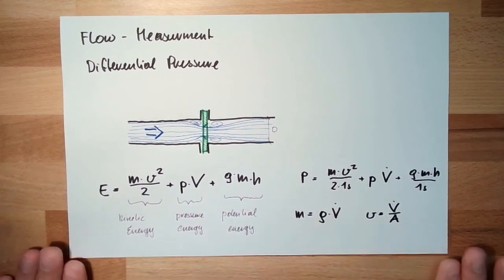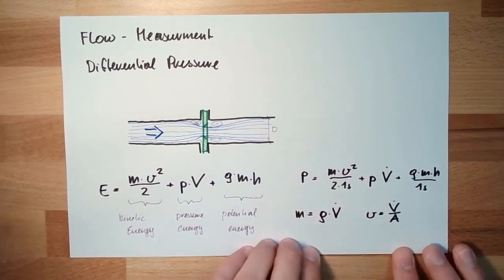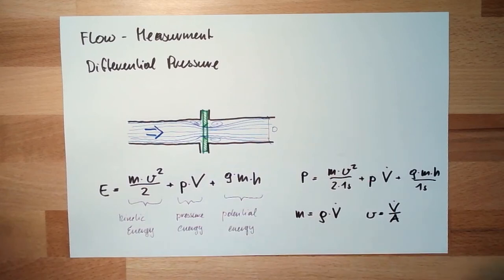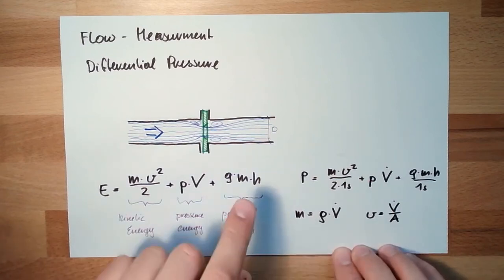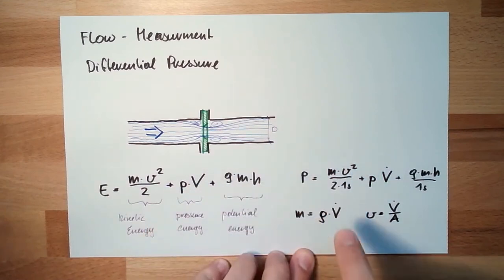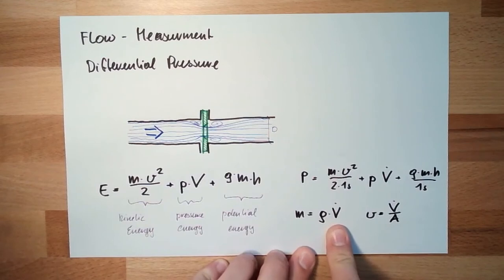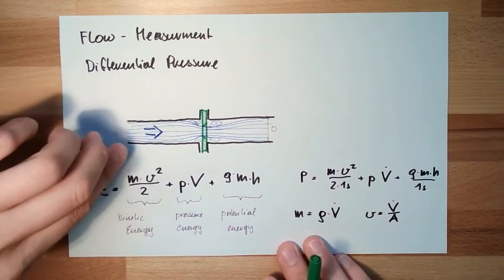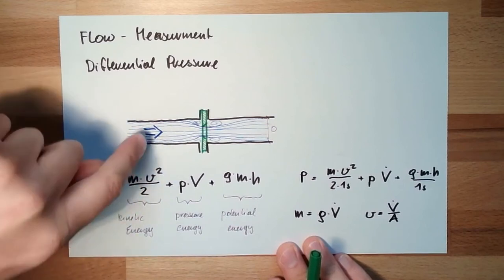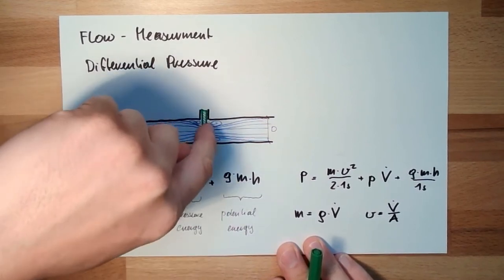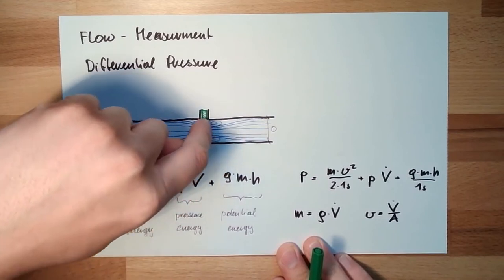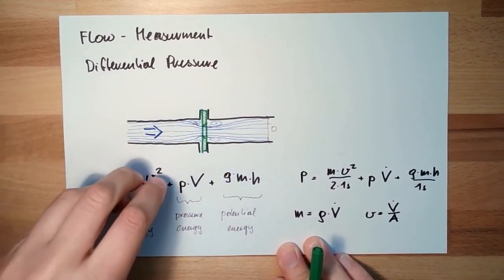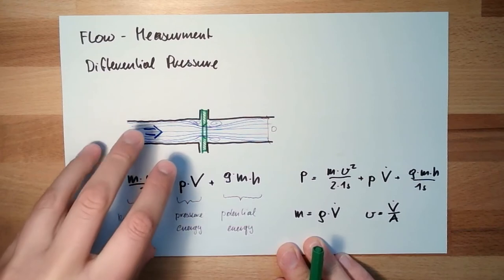If I put all these things together, I can calculate an equation just in terms of volume flow. From the principle it's rather easy: if there is some energy inside the liquid here, we must have the same energy on the other side. Here the flow is faster, so the kinetic energy is bigger.